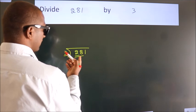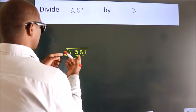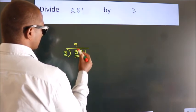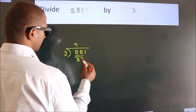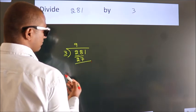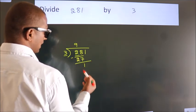A number close to 28 in the 3 table is 3 times 9 equals 27. Now we should subtract. We get 1.